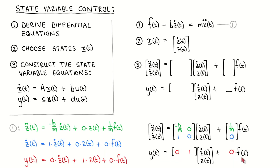At this point, we have determined the matrix A, the column vector B, the row vector C, and the scalar D. These quantities describe the dynamics of the system, and we can use them to analyze the system and design a compensator.